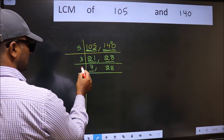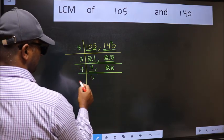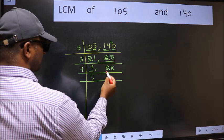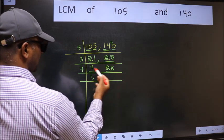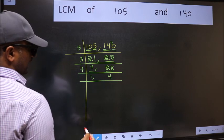Now here we have 7. 7 is a prime number, so 7 times 1 is 7. The other number is 28. When do we get 28 in the 7 table? 7 times 4 is 28.